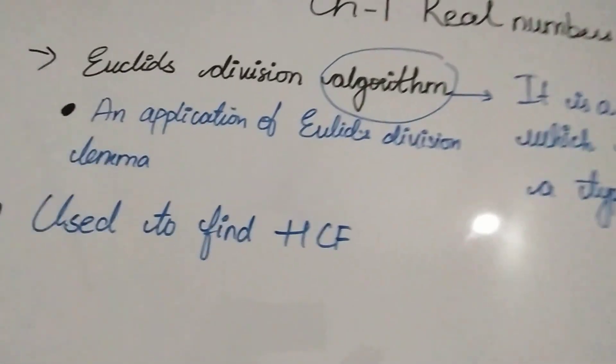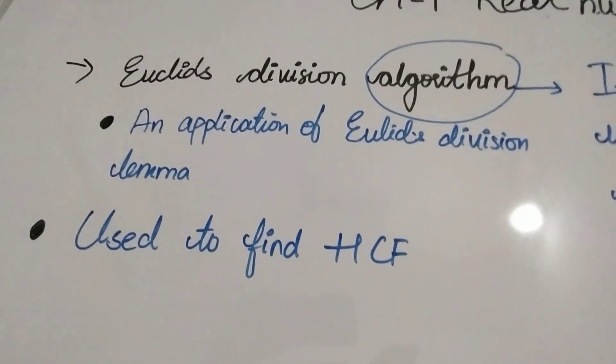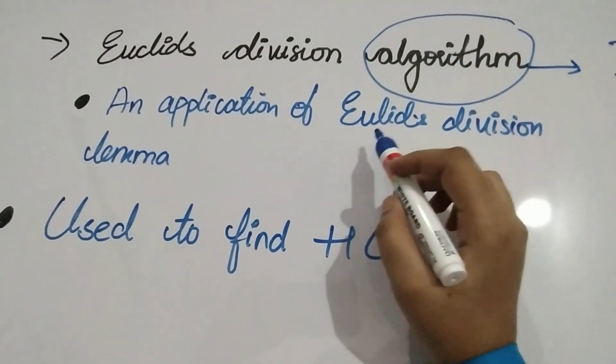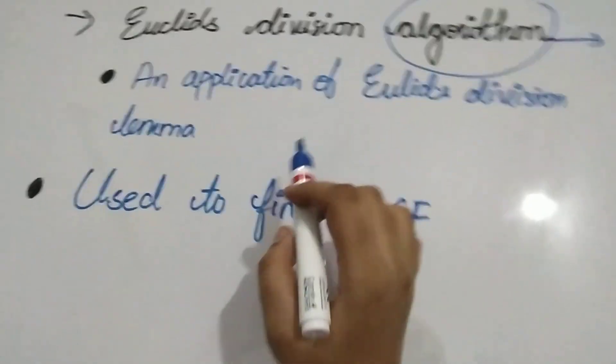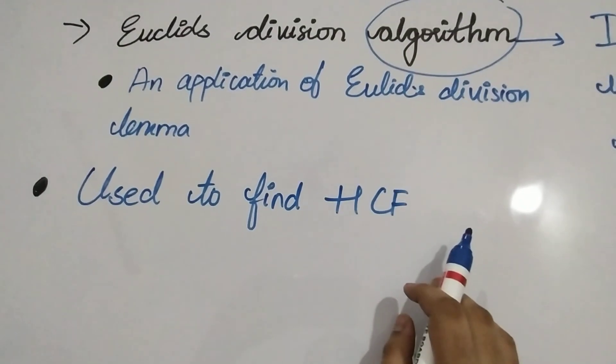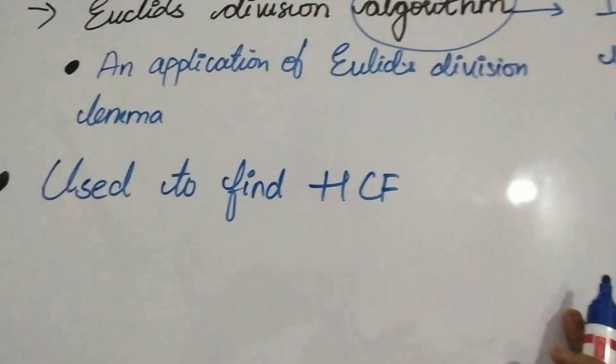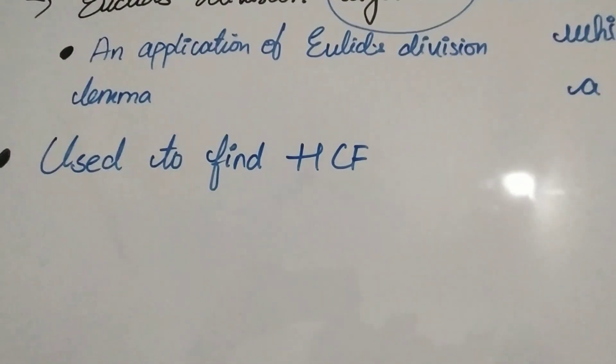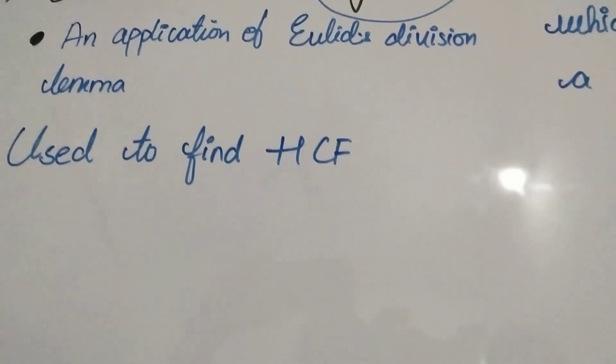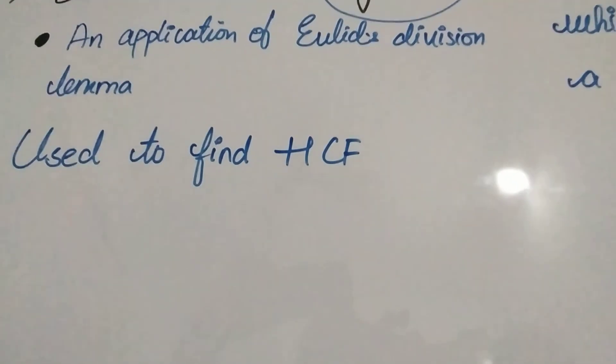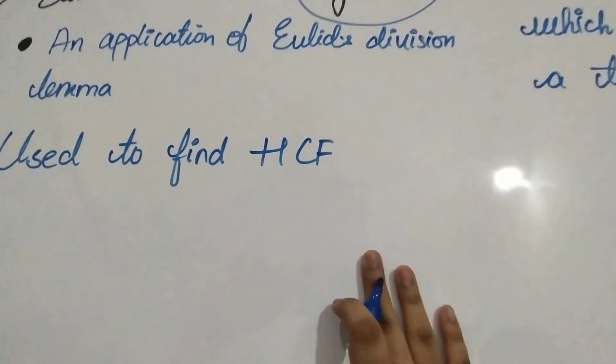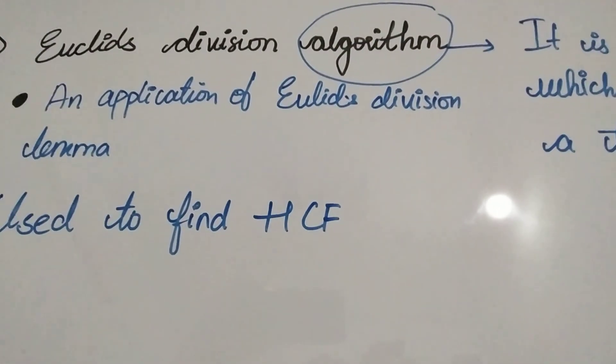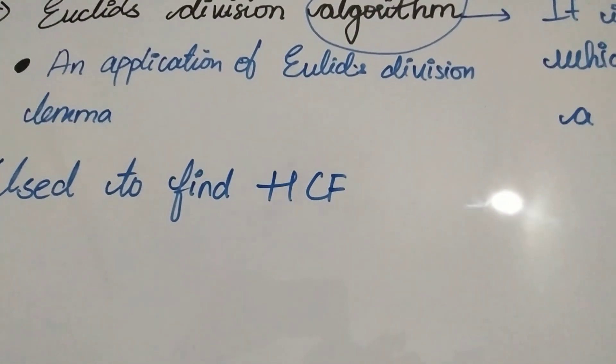How is Euclid's division algorithm different from Euclid's division lemma? Euclid's division algorithm is an application of Euclid's division lemma and it is used to find HCF, basically of large numbers.